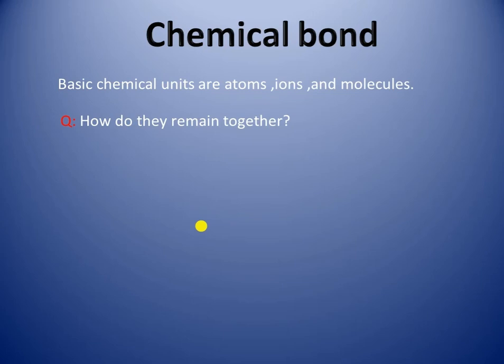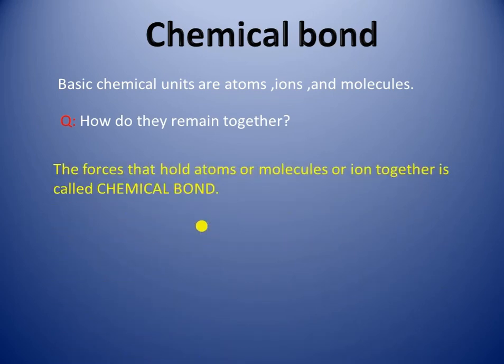On the other hand, liquid state and solid state contain atoms, ions, or molecules. Therefore, the basic chemical units are atoms, ions, and molecules. Now the question is: how do they remain together?